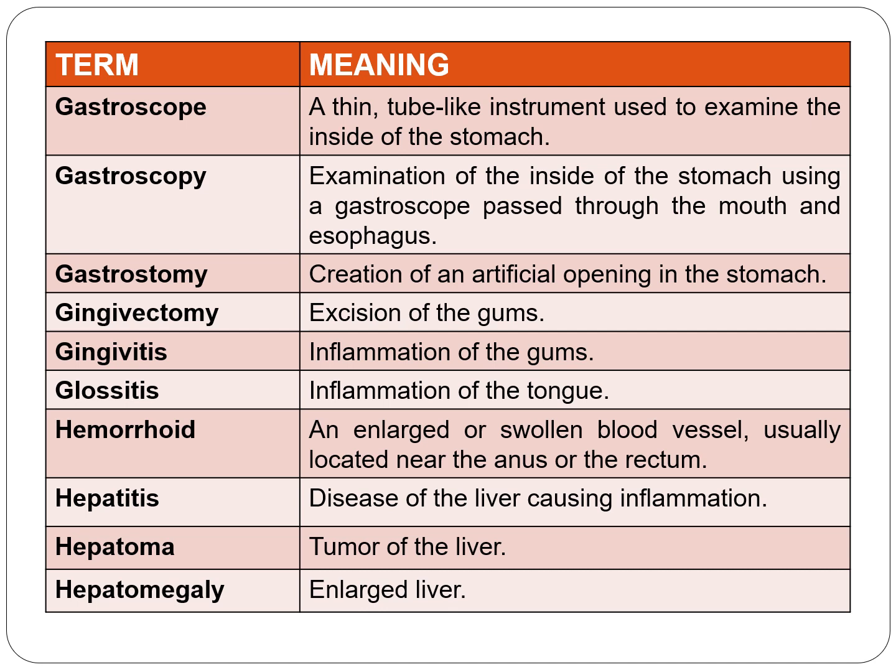Gastroscopy is examination of the inside of the stomach using a gastroscope passed through the mouth and esophagus. Gastrostomy is the creation of an artificial opening in the stomach. Gingivectomy — 'gingiva' means gums, 'ectomy' means surgical removal — so gingivectomy is excision of the gums.